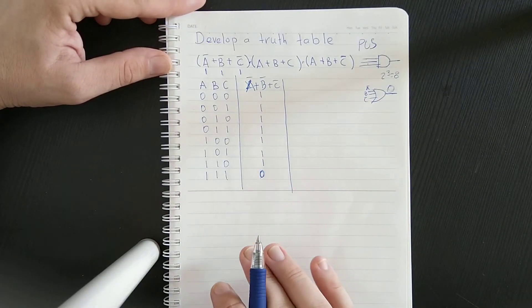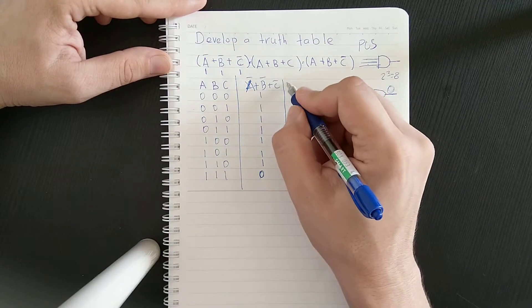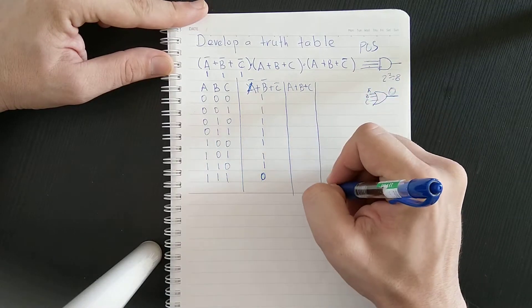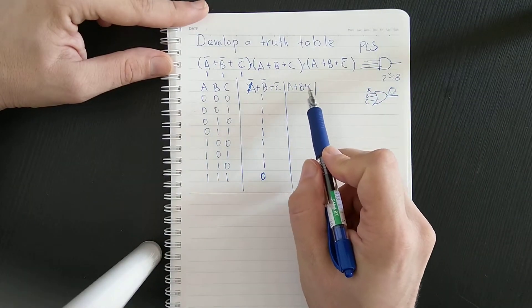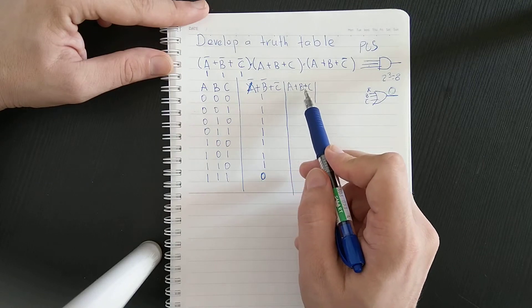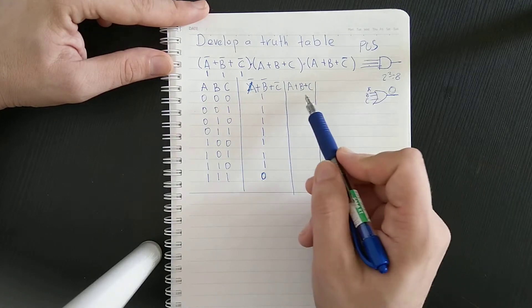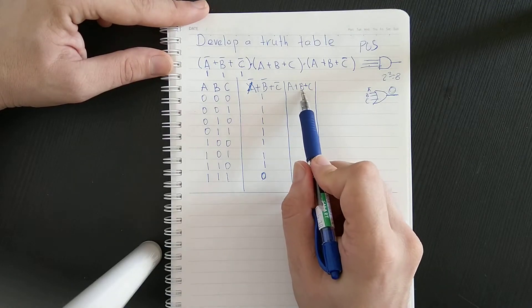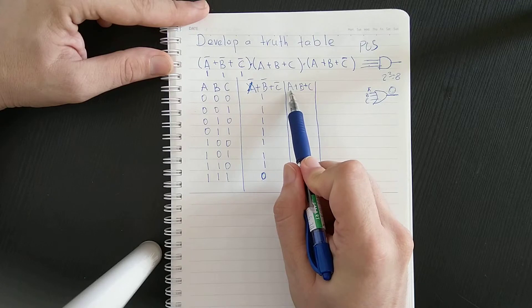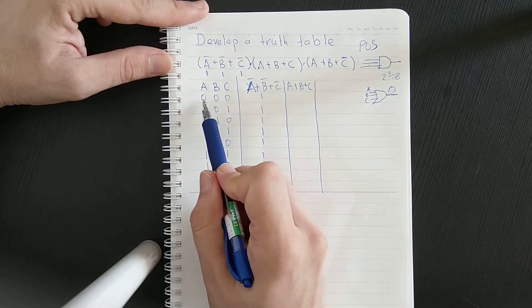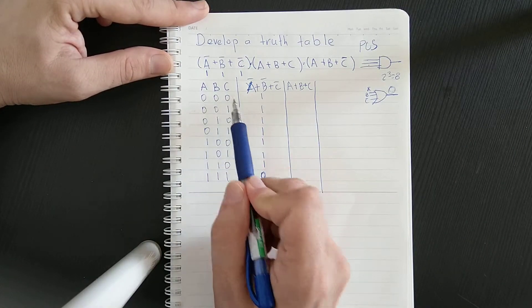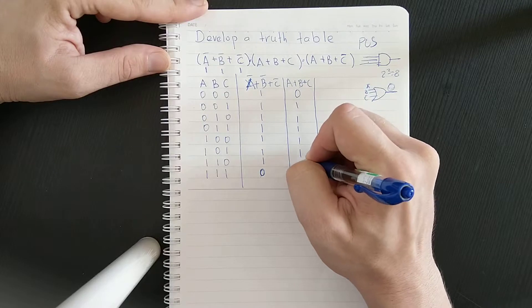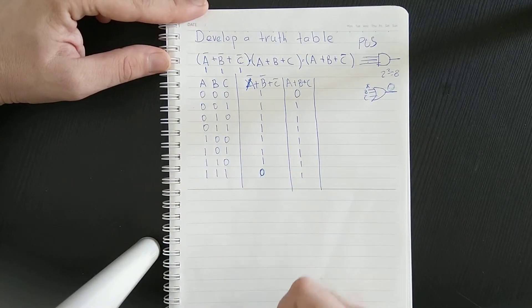Now evaluate the next expression: A plus B plus C. Same logic — this is attached to an OR gate, so the output is zero only when all variables are zero: A equals zero, B equals zero, C equals zero. So only row 000 gives zero, and the rest are automatically one.